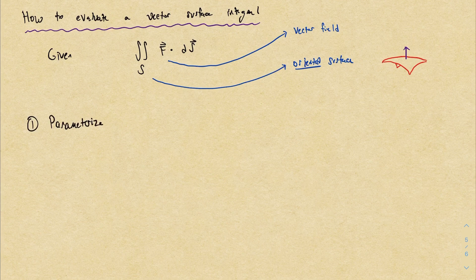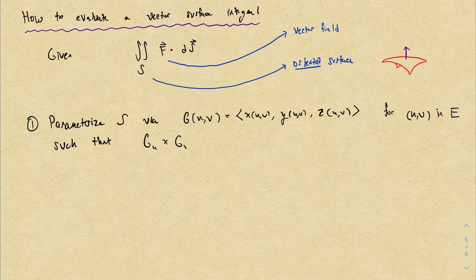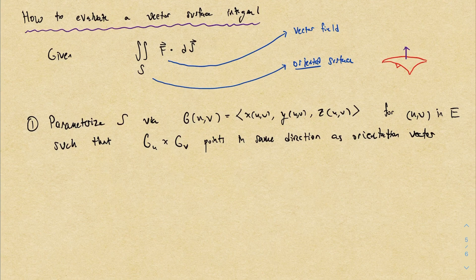We start out by parameterizing the surface just as we did in the scalar case. This means we'll write x, y, and z in terms of u and v, and we'll have to specify a parameter domain for u and v. The main difference now is that we need to make sure the normal vector for the parameterization points in the same direction as the orientation of our surface — they need to match up. This is usually the most subtle part, and we'll get some practice in the examples.